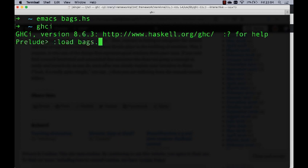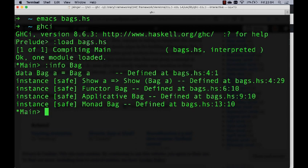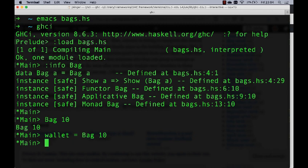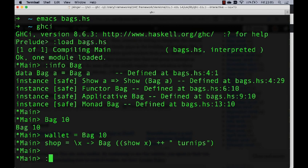But now we can start using bags inside GHCI. So I'm going to load bags.hs. Info bag. There we go. So now I can say here is a bag with 10 pence inside it. Let's call this wallet. And now I'm going to have a shop function which takes some money, x amount of it, and is going to give us that many, which we sell in our shop. Let's sell turnips. There we go. It gives us that many turnips, which is a string and we want to return it inside a bag. That's the shop function.